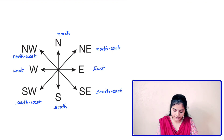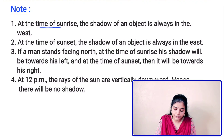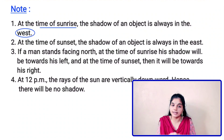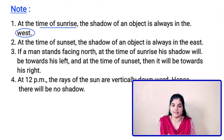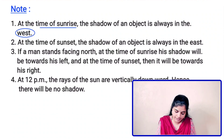Please note a few points before answering questions related to the direction sense test. The first point is that at the time of sunrise, the shadow of an object is always in the west, because the sun rises from the east. Therefore, the shadow during sunrise will obviously fall towards the west side, whatever might be the direction the object is facing.